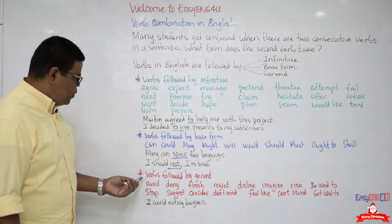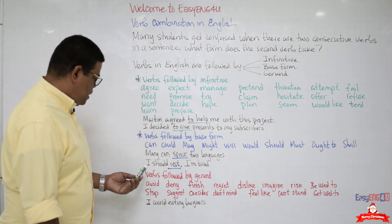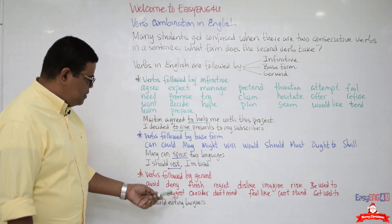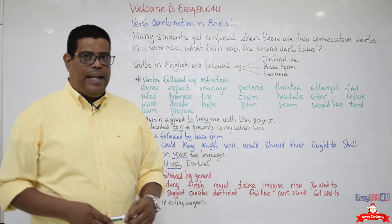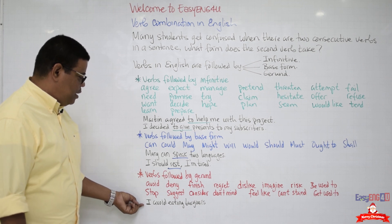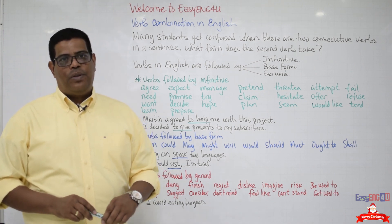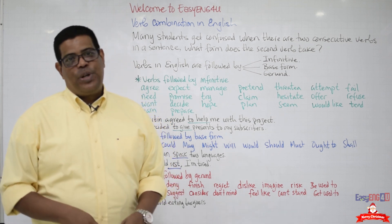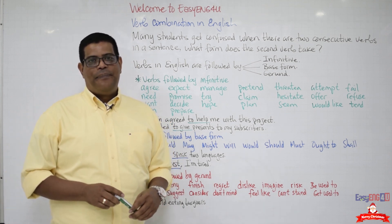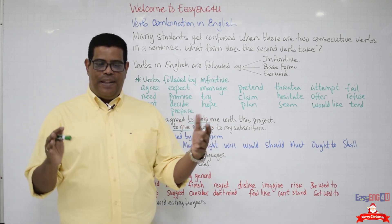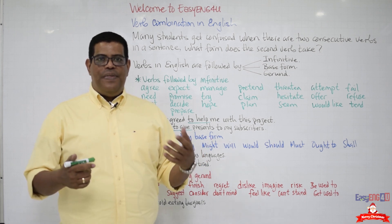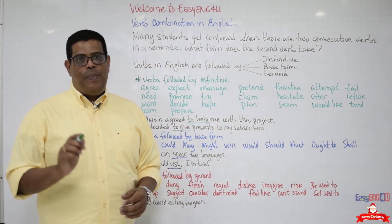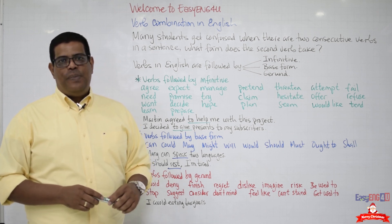Let's finish with which verbs are followed by gerunds. The list includes: avoid, deny, finish, regret, dislike, imagine, risk, be used to, stop, suggest, consider, don't mind, feel like, can't stand, and get used to. For example: 'I avoid eating burgers' — though that's not true about me because I love burgers! And I can say 'I feel like eating a burger right now' because I'm kind of hungry. As you can see, verb forms and verb combination go together in English, and they help us determine the form a consecutive verb takes, especially when writing.